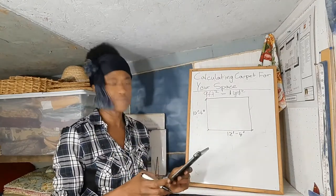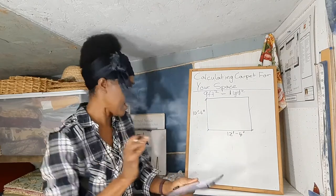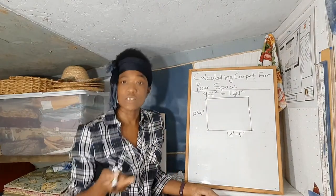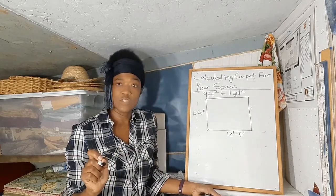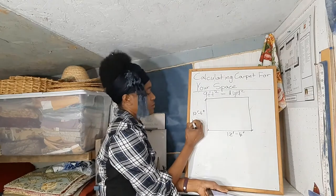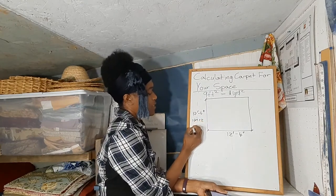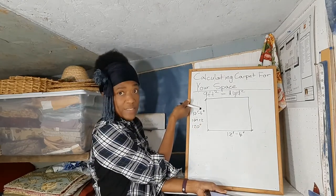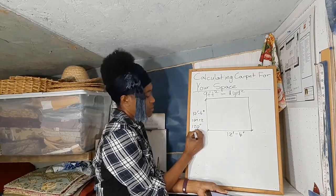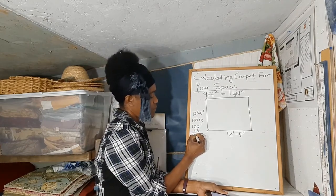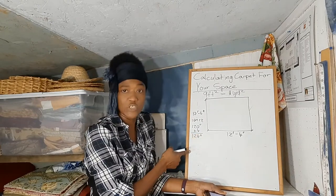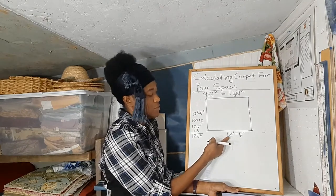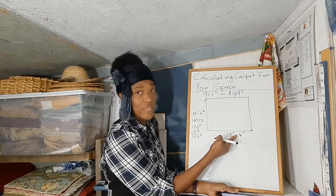There are 12 inches in a foot, so for the length: 10 times 12 equals 120 inches. We can't forget about the 6 inches, so we add it. The length will be 126 inches.